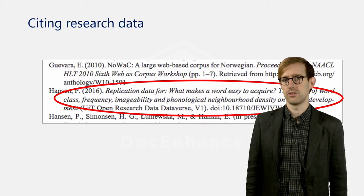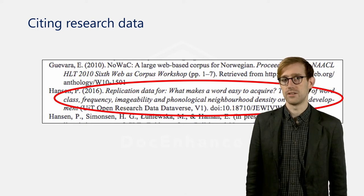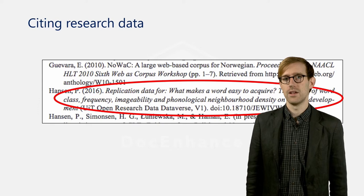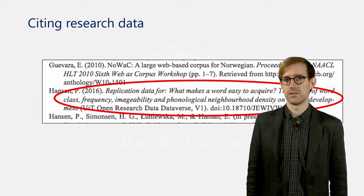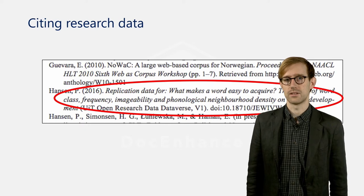Author, year of publication, title, identifier, and publisher are examples of components you should find in any kind of reference. Also keep in mind that special requirements may apply when working with multiple data sets, so-called derived data.